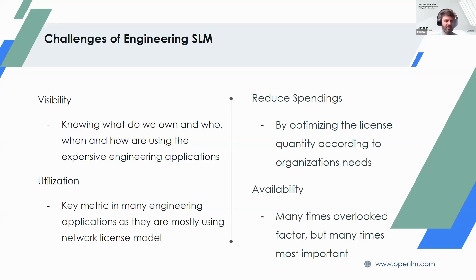Now I'll talk about a high-level overview of the challenges of engineering software license monitoring. There are four categories. The first is visibility. All your contracts are spread across emails, documents, license files, and in many cases — not unusual for license administrators dealing with engineering licensing — they keep data in spreadsheets. That might work for a small operation with a few applications to track, but it gets more difficult with each additional application.